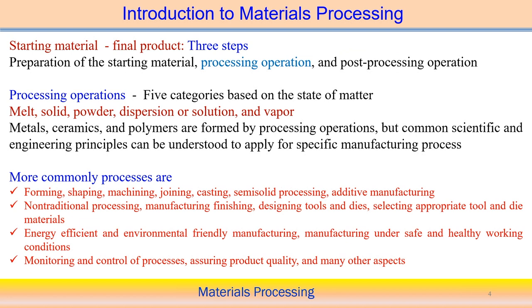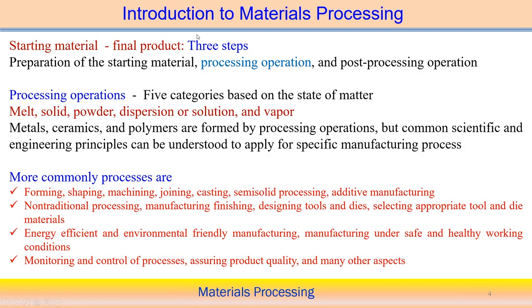There are three steps from starting material to the final product. The first is preparation of the starting material — the material has to be ready such that it can be further processed through several manufacturing processes. The second is the processing operations, and sometimes we need a third step: post-processing operations to make it usable for a particular application. Our focus in manufacturing processes is mostly associated with the processing operation.